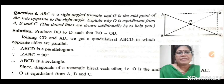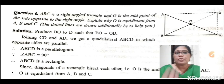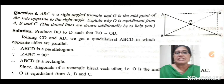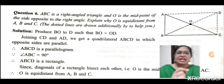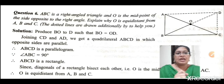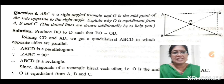Question six: ABC is a right-angled triangle and O is the midpoint of the side opposite the right angle. Explain why O is equidistant from A, B, and C. To prove this, we extend the line from O to D such that OD equals OB, then join the points.